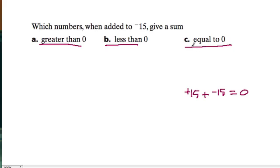So in part C, we could say only the opposite of negative 15, because there really is no other number that exists anywhere. When we add to negative 15, it gives zero. It's only this number.